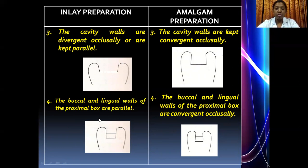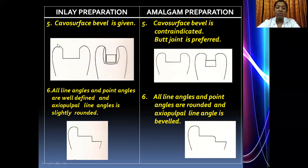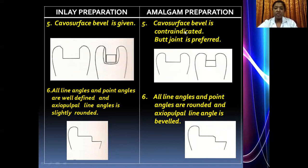The fourth difference concerns the buccal and lingual walls of the proximal box. For an inlay preparation, the buccal and lingual walls of the proximal box are kept parallel. Whereas for amalgam, these walls also converge toward the occlusal surface. The fifth difference is the cavosurface margin design. For an inlay, a cavosurface bevel is placed — creating an obtuse angle in tooth structure and an acute angle in metal — allowing a thin layer of metal to encircle and reinforce the weakened tooth structure. For amalgam, no bevel is indicated at the cavosurface; it is a 90-degree butt joint.